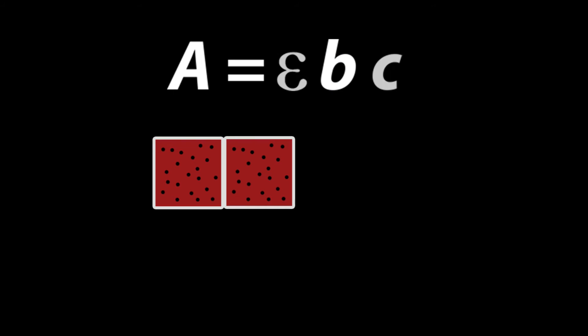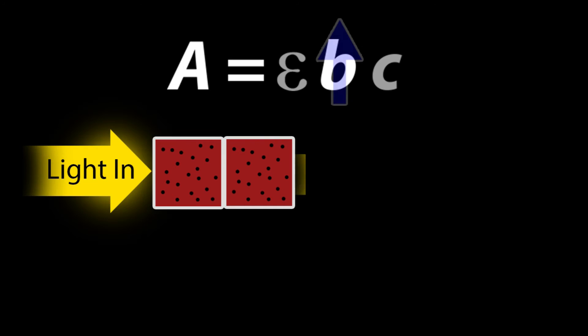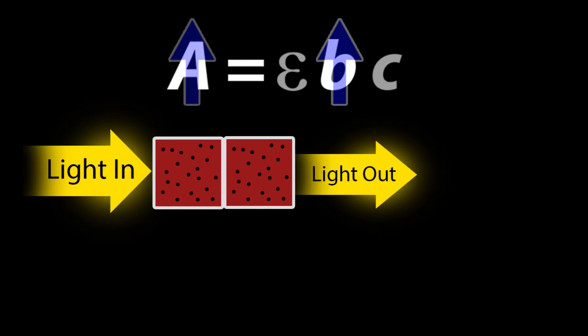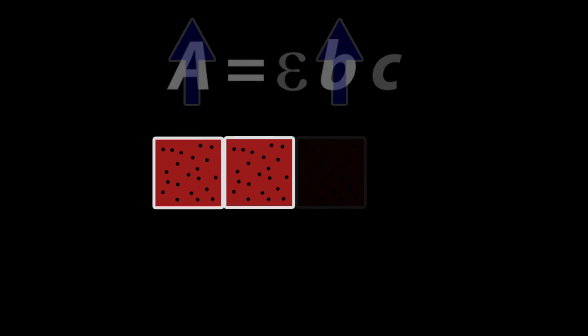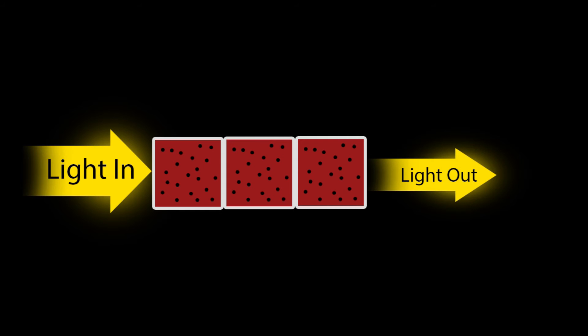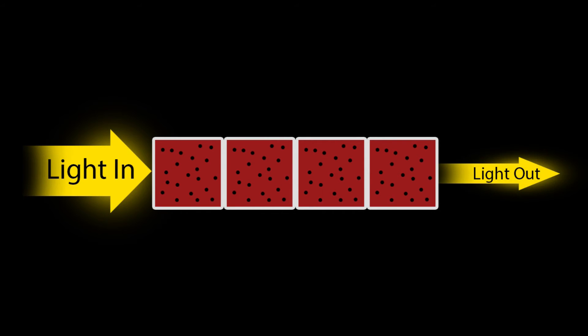If Epsilon and C are held constant, and we double the thickness, notice that absorbance will double as well. Each time I put a cuvette down in front of the others, less light is allowed to pass through the sample. Because I am increasing the number of molecules the light comes into contact with as it passes through the substances, I am increasing the amount of light that is being absorbed by the material, and therefore less light is making it out the other side to my eye.